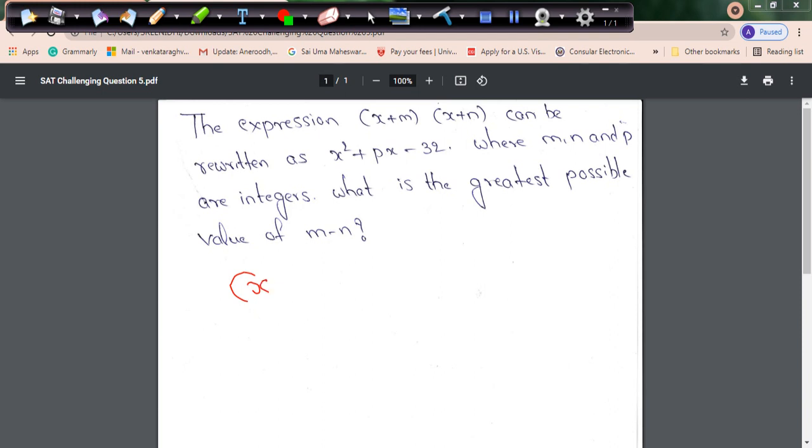Where M, N, and P are integers, what is the greatest possible value of M minus N? So when I multiply I get X² plus (M+N) into X plus MN equals X² plus PX minus 32.